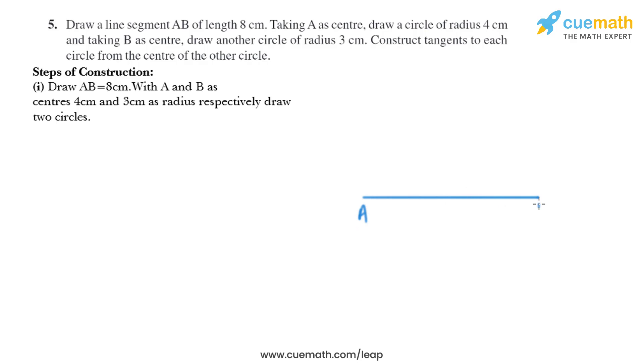So this is A and this is B and that equal 8 cm. And with A and B as centers, 4 cm and 3 cm as radius respectively, draw two circles. So we need to draw two circles like this.